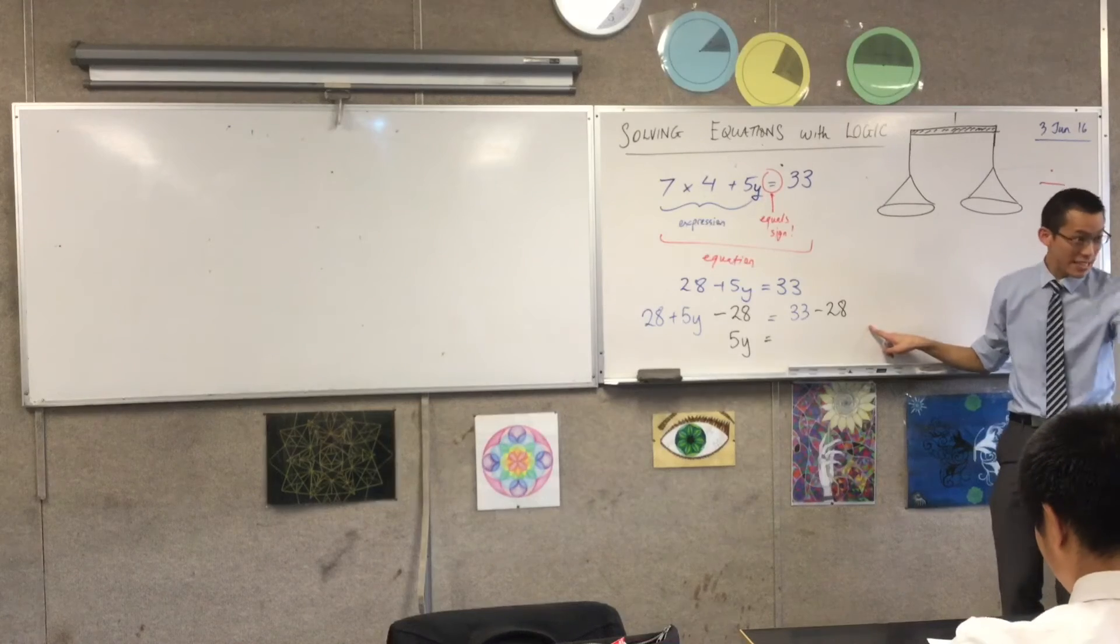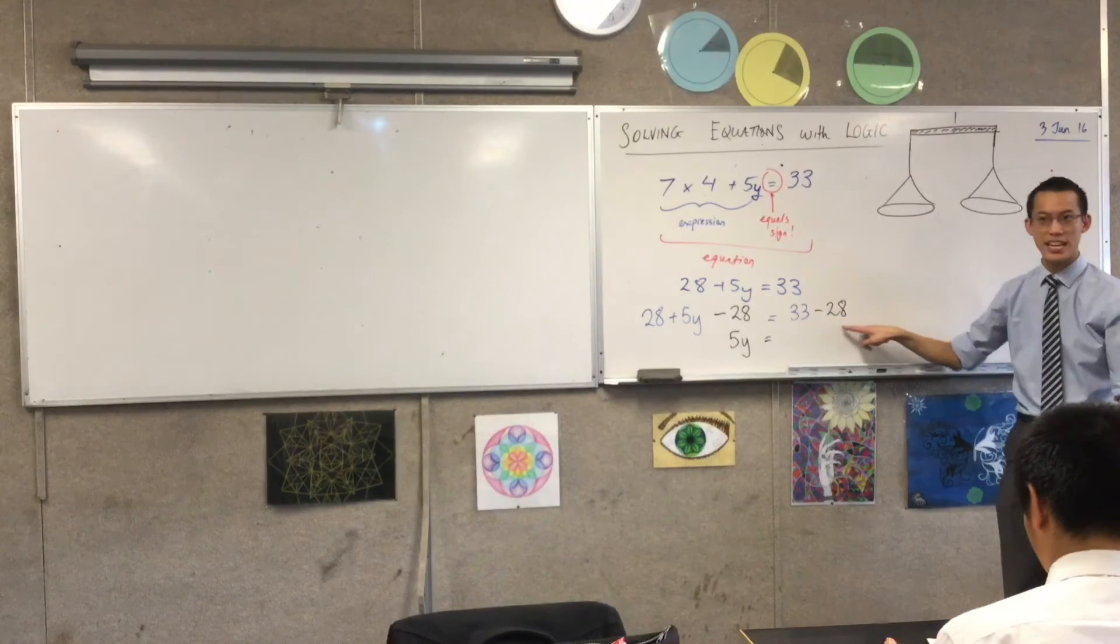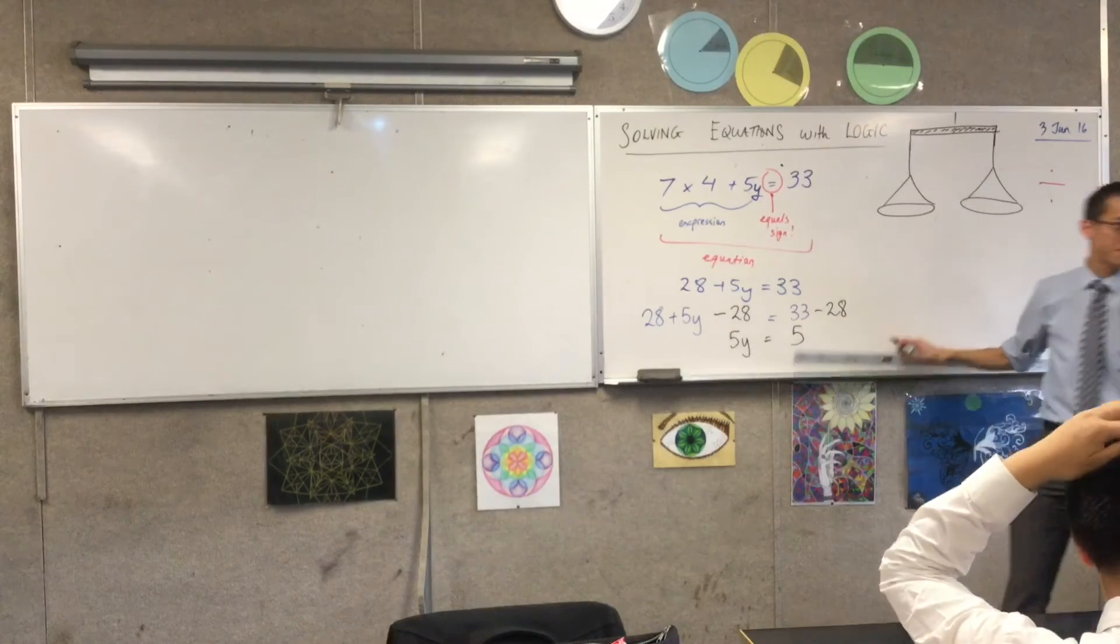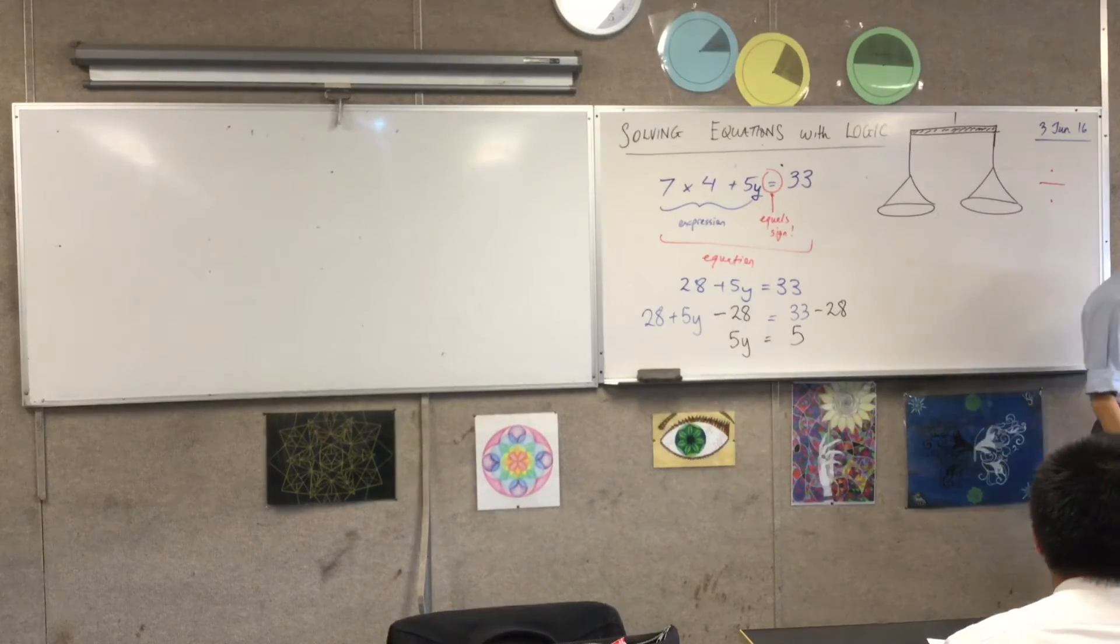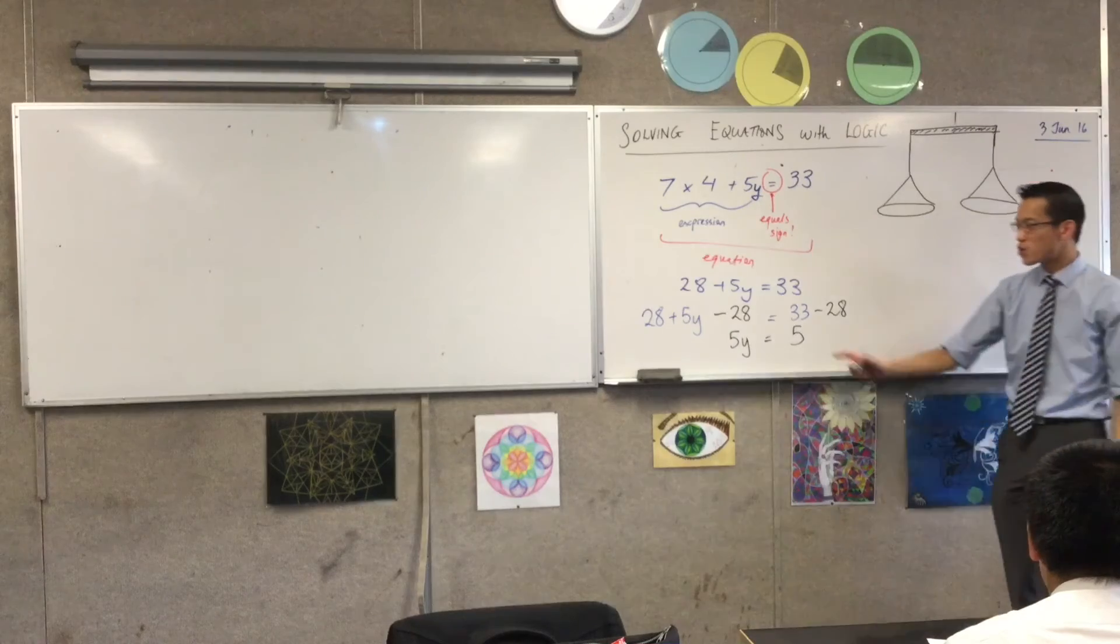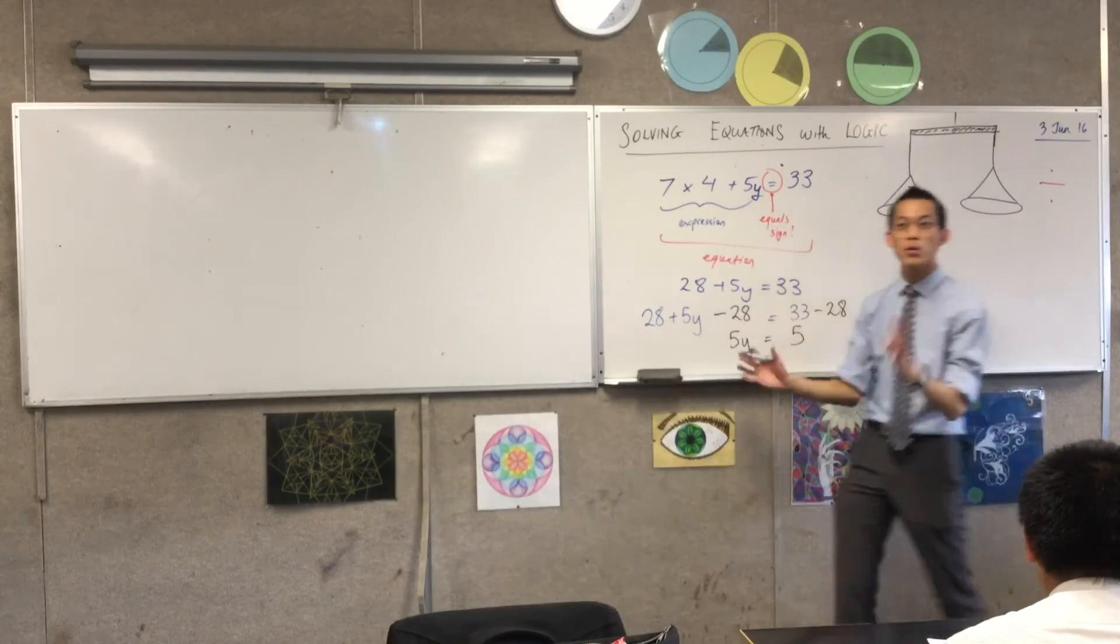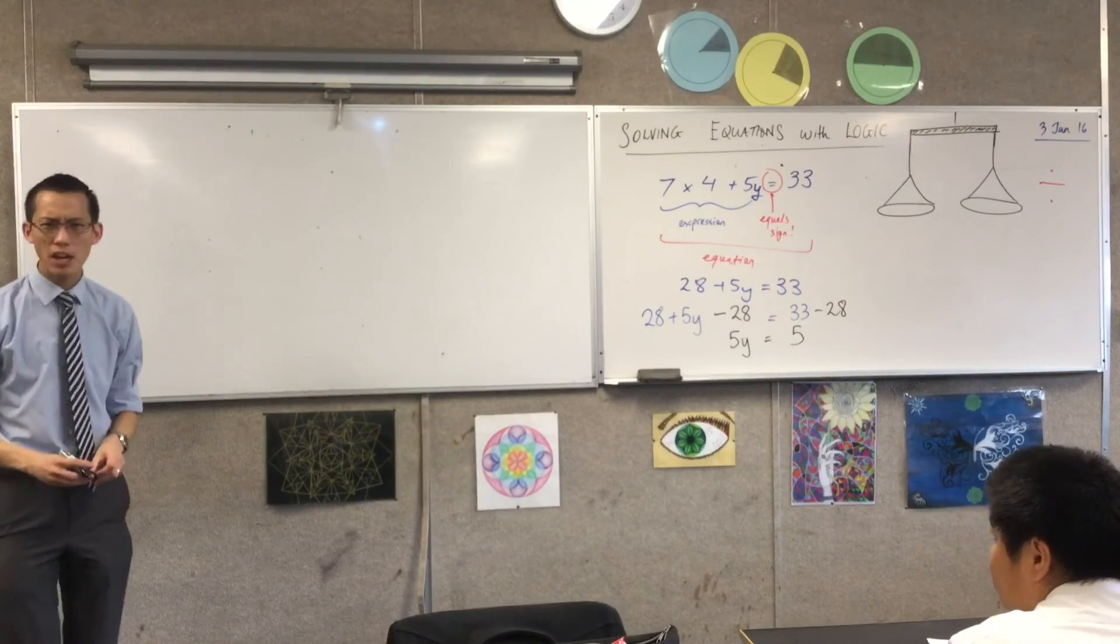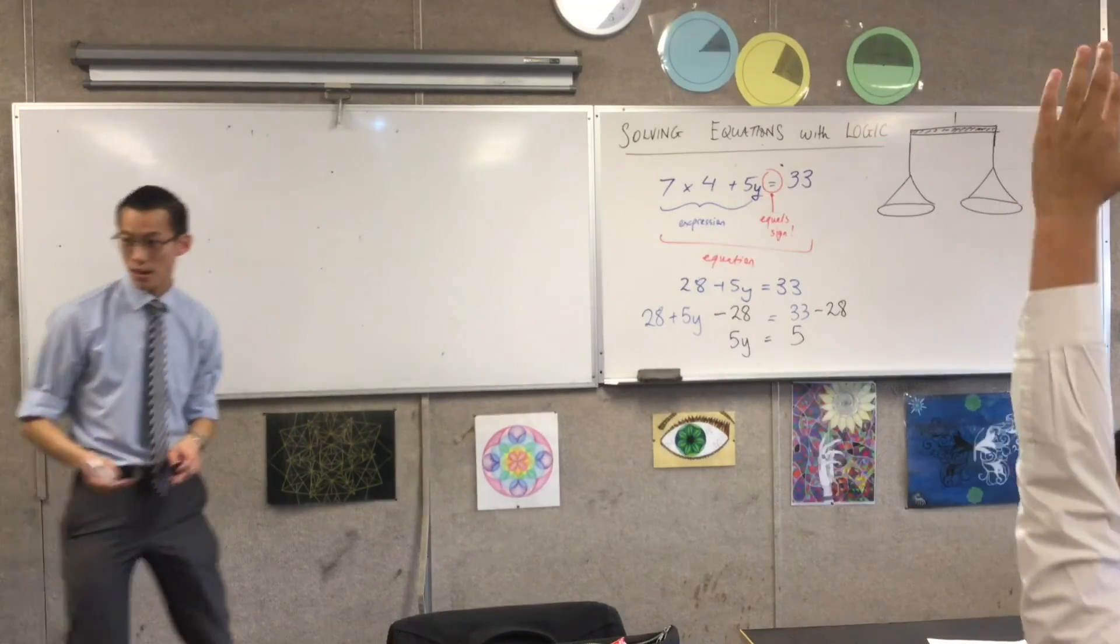On the right-hand side, I need the working, right? 33 take away 28, it's just five. Now again, this is a balanced thing, right? Both sides are the same. So I want to do something to both sides that will give me just one y by itself. What am I going to do? Yeah, Rinesh.